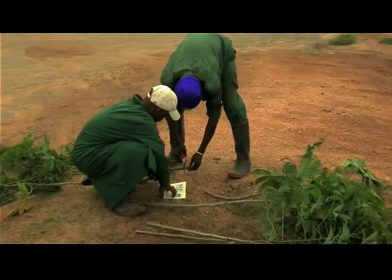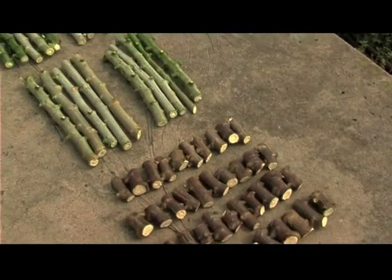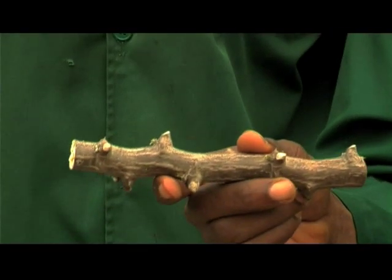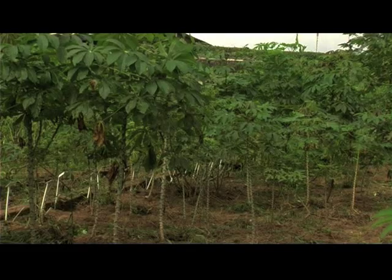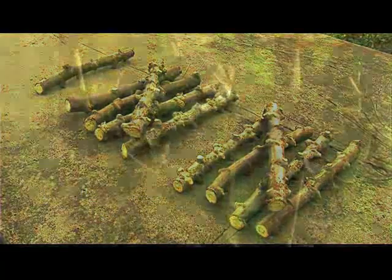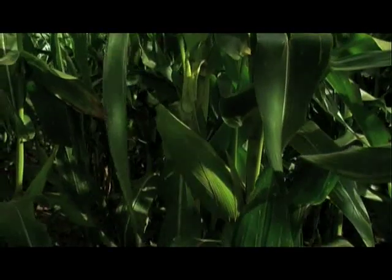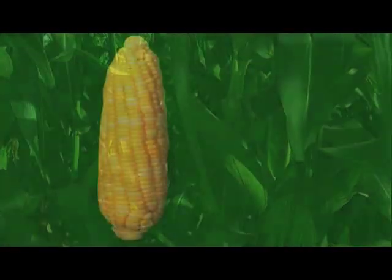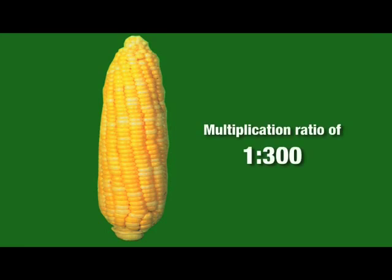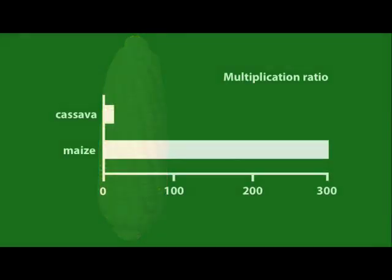Multiplication ratio is the increase in planted materials over what has been planted. For example, a cassava stem cutting when planted yields about 10 stem cuttings 12 months later. In contrast, a maize plant which yields a cup with about 300 seeds has a multiplication ratio of 1 to 300. Thus, cassava has a low multiplication ratio compared with maize.